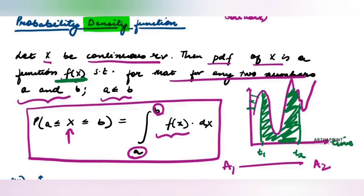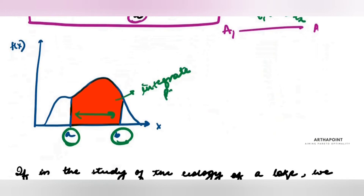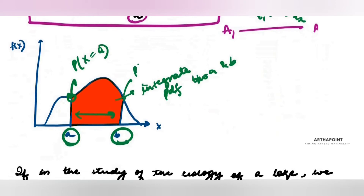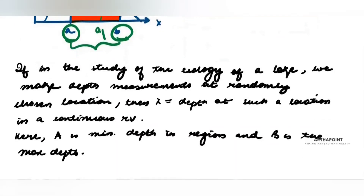The probability density function gives you the probability of different speeds at different time periods. For the probability between two time periods you integrate that function. From a to b, if I ask what is the probability that X will be between a and b, you integrate the probability density function between a and b. The function at different points tells you the probability at that particular value, but for an interval you integrate it.